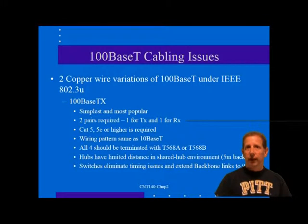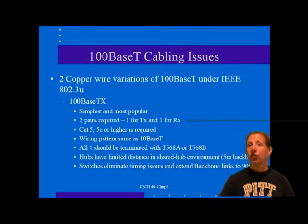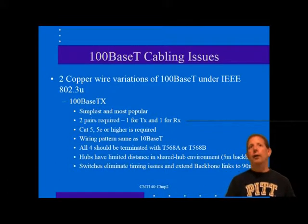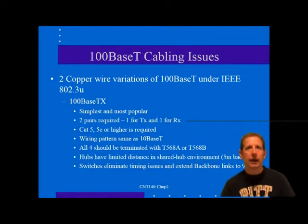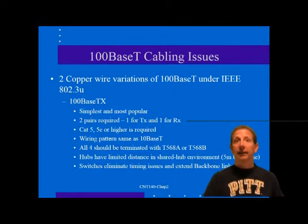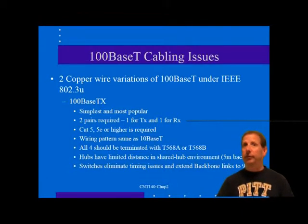For 100BaseT cabling issues: standards for 100 meg Fast Ethernet networks have evolved rapidly. Many proprietary methods and interim standards were put forward since 10BaseT was first introduced. The IEEE 802 standards committee resolved competing technologies with a supplement detailing the implementation of 100BaseT. There are two copper wire 100BaseT variations under the 802.3u supplement: 100BaseTX and 100BaseT4. A companion 100BaseFX rounds out the 100 meg CSMA/CD standard, along with the non-CSMA/CD 100VG-AnyLAN under IEEE 802.12. These 100 megabit Ethernet topologies are sometimes referred to as Fast Ethernet.